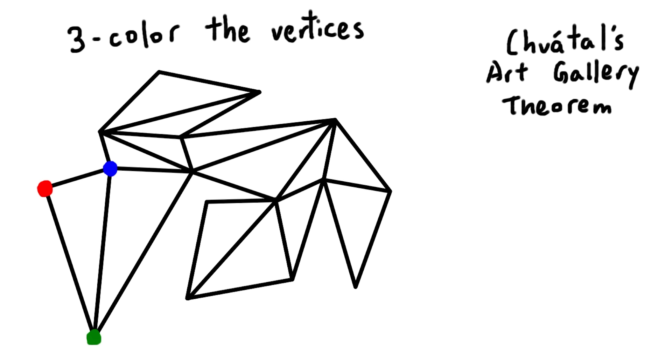Since we can't use any of those two vertices' colors, we pick the third color that hasn't been used yet, and then we repeat this for the whole polygon.